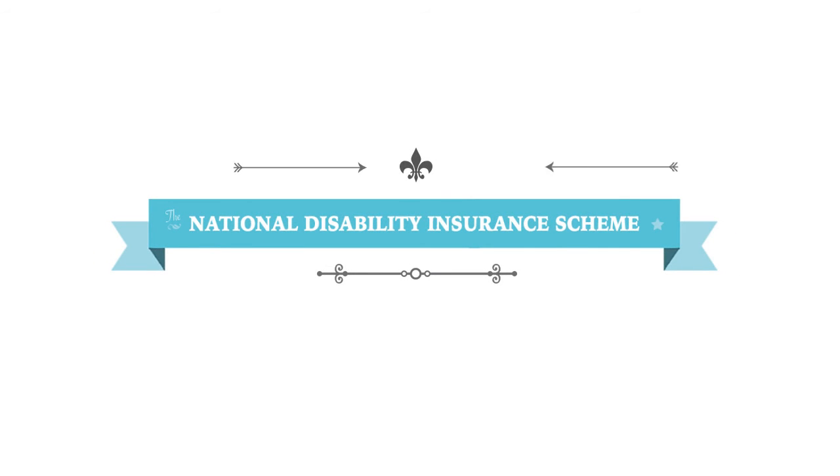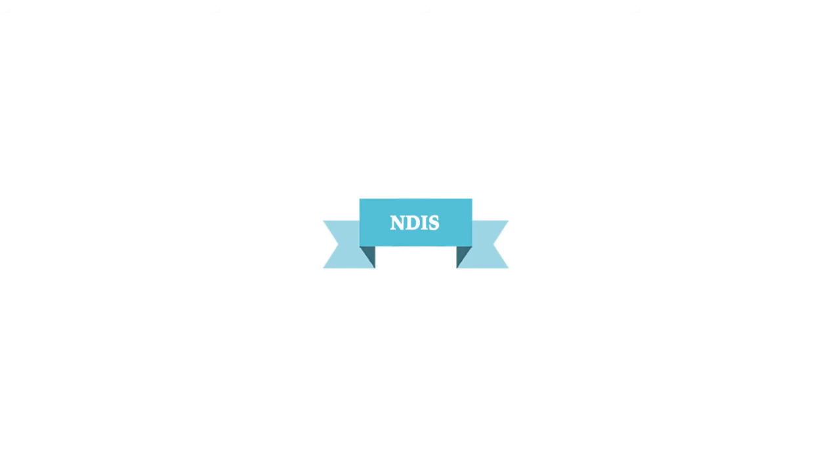Then in 2013, the government started to roll out the National Disability Insurance Scheme, or the slightly catchier NDIS. Under this new scheme, the money goes directly to individuals affected by disability, who then go looking for services they want. They're no longer clients, they're more like customers, and for the first time they have real choice. Which is great, right? Well yes, but it presents another problem.